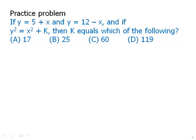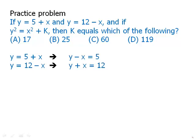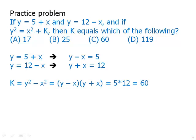Here's a more test-like practice problem with four answer choices. Given y equals 5 plus x and y equals 12 minus x, we rewrite to see that y minus x equals 5 and y plus x equals 12. We want to find k, which equals y squared minus x squared. Factoring using the difference of two squares gives y minus x times y plus x. Substituting the known values, that's 5 times 12, which equals 60. So k equals 60.